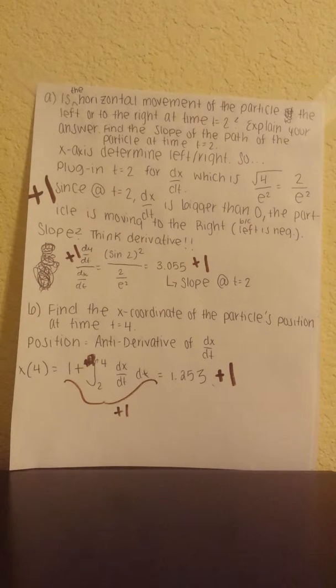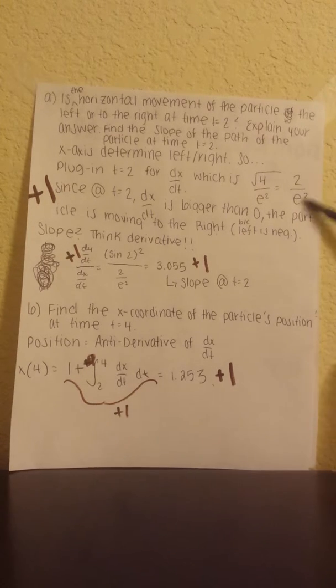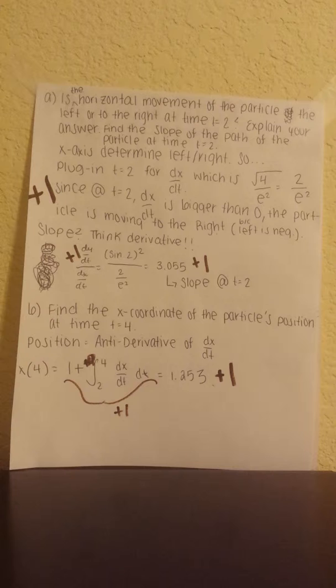We would plug in t equals 2 for dx/dt, which will give us an answer of 2 over e to the 2. And since at t equals 2, dx/dt is bigger than 0, the particle is obviously moving to the right because left would be negative and we got a positive answer.